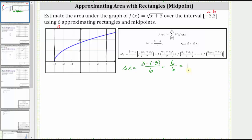Now we'll form six sub-intervals with a width of one unit from negative three to positive three. Now that we have our sub-intervals, we know x sub zero is equal to negative three, x sub one is equal to negative two, x sub two is equal to negative one, and so on, where x sub six is equal to positive three.